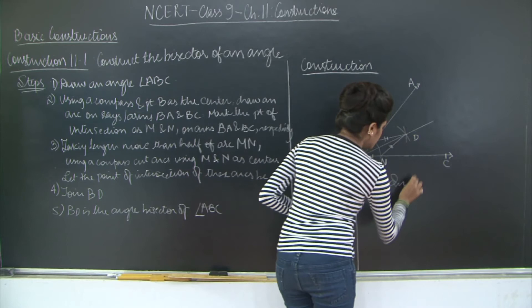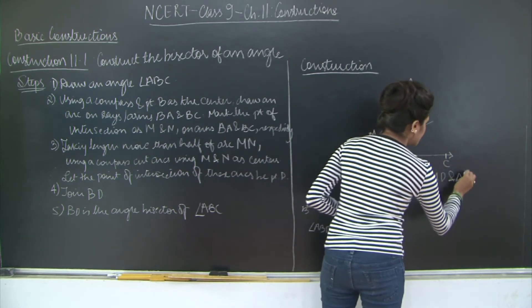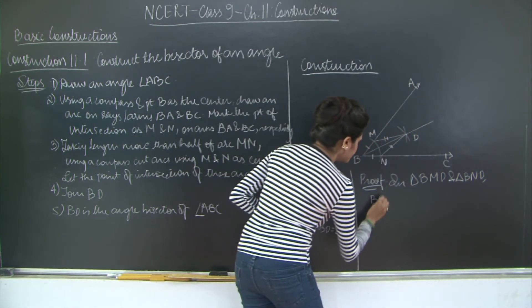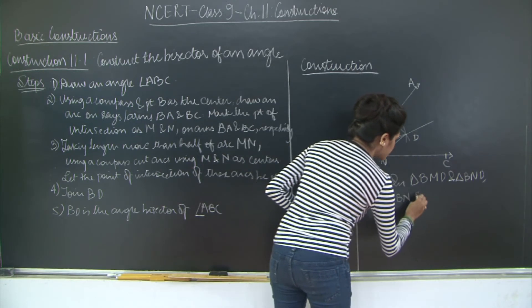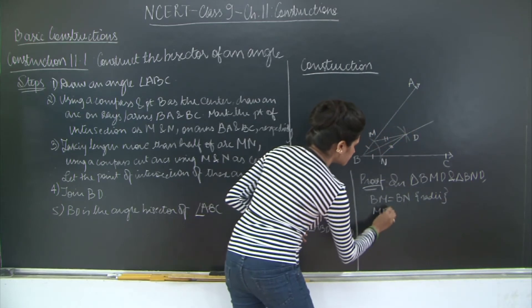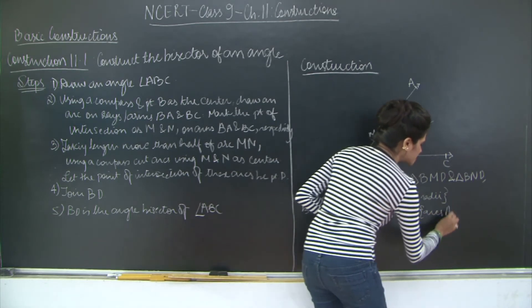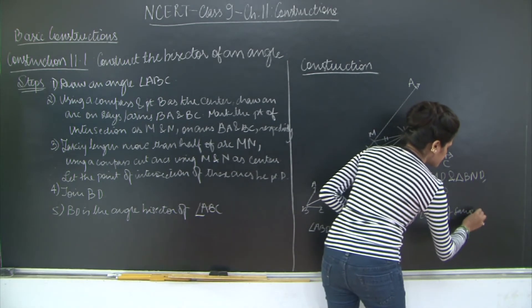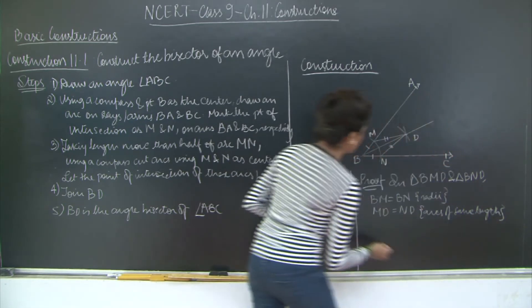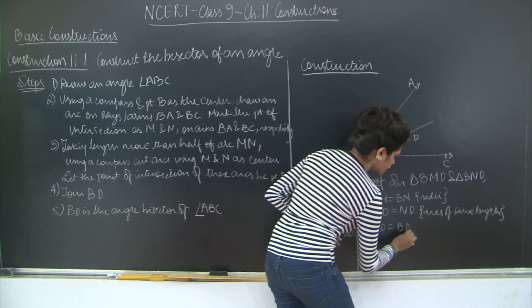You have in triangle BMD and triangle BND, BM is equal to BN radii. Then you have MD is equal to ND arcs of same length. And you have BD is equal to BD common side.